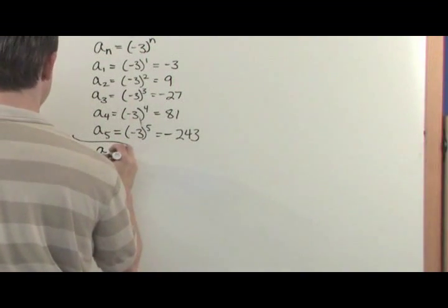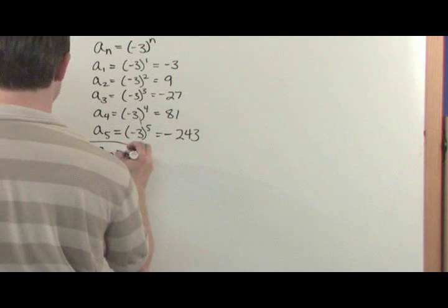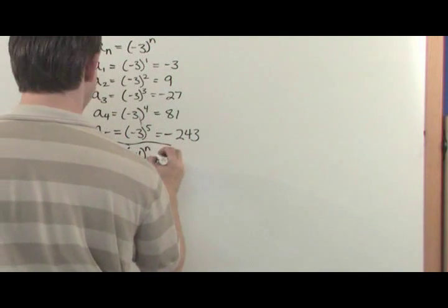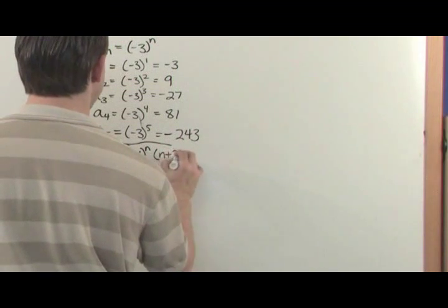Now what if your sequence was a little bit more complicated. What if it was a sub n is equal to negative 1 to the nth power times n plus 3.